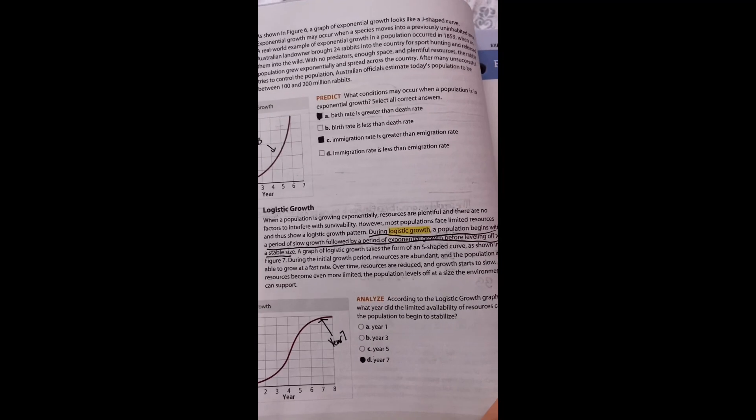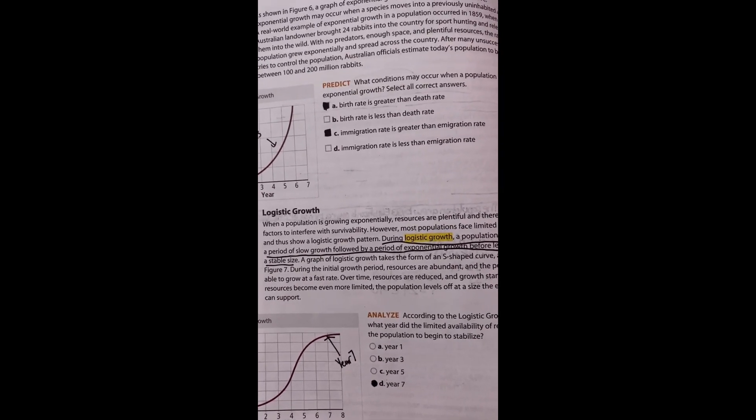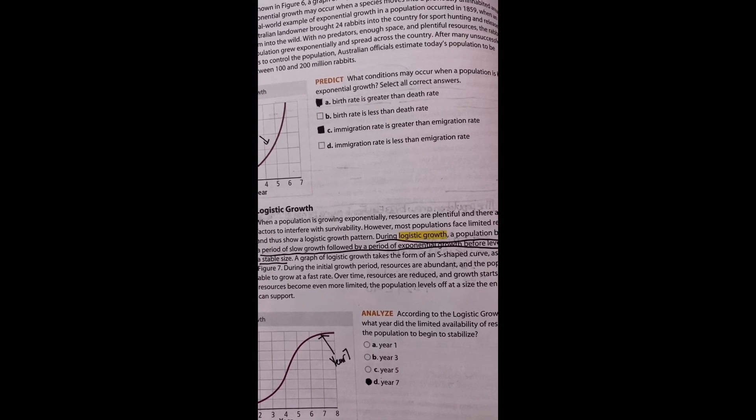What conditions may occur if the population is in an exponential growth cycle? Correct answers: A) birth rate is greater than death rate, and C) immigration rate is greater than emigration rate.